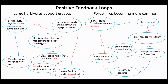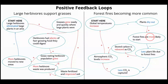Arrows show cause and effect relationships. Sometimes the change in the first oval causes the next step to increase or become more common — this is represented with a red arrow and a plus sign. Other times the change in the first oval causes the next step to decrease or become less common — this is represented by a blue arrow with a negative sign.